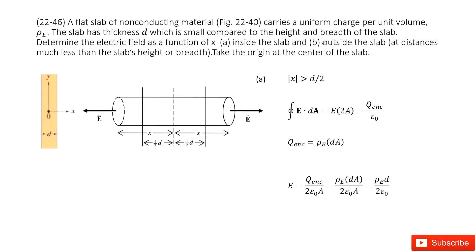The next one, we can see outside of the slab. So that means the absolute value of x is larger than d over 2. So we still use Gauss's rule. We use electric field times Gaussian surface. This is A, this is A.